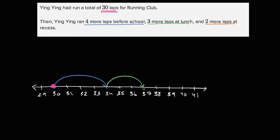And then two more laps at recess. So she was at 37. And now we're going to go one, two to 39. So how many total laps does Ying Ying run? Well, Ying Ying runs a total of 39 laps. And we were able to figure it out using this number line.